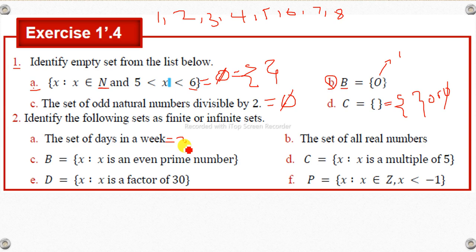Rational and irrational. The set of rational numbers and the set of irrational numbers are what we call the set of natural numbers. We call it the set of natural numbers.